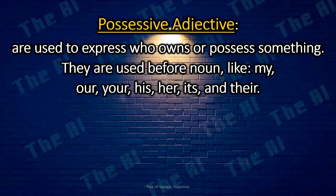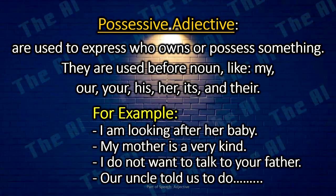Possessive adjectives are used to express who owns or possesses something. They are used in front of a noun, like my, our, your, his, her, its, and their. For example: I am looking after her baby. My mother is very kind. I do not want to talk to your father. Our uncle told us to do our homework.